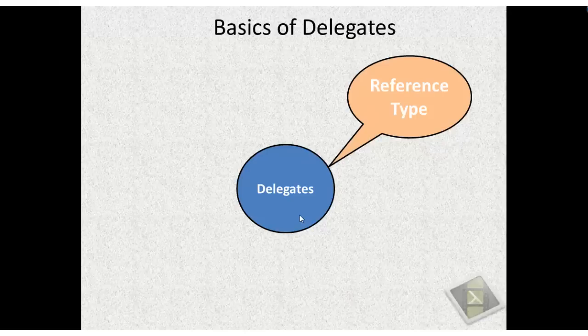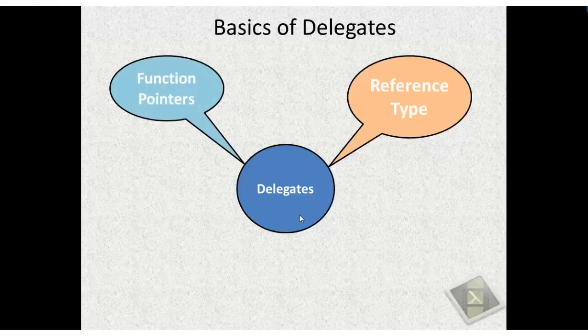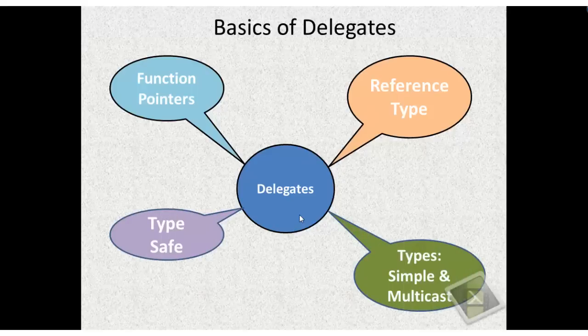So what are delegates? Delegates are function pointers — in fact, they are type-safe function pointers. We will see the meaning of type-safe function pointers shortly. There are basically two different types of delegates: simple delegate and multicast delegate. In the later session, we will discuss multicast delegates.